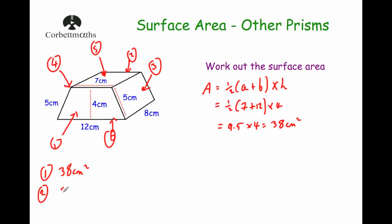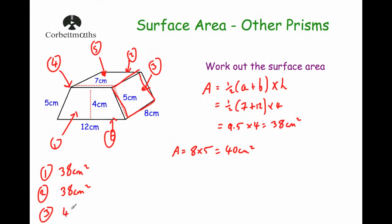Now let's look at faces three and four, the two side rectangles. The sides of the trapezium on the left and right are both 5 centimeters, and the length of the prism is 8 centimeters. Area equals 8 times 5, which equals 40 centimeters squared. The same applies to the left-hand side — also 5 times 8. So face three is 40 cm² and face four is also 40 cm².